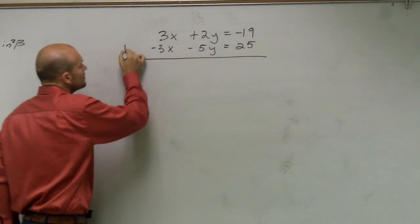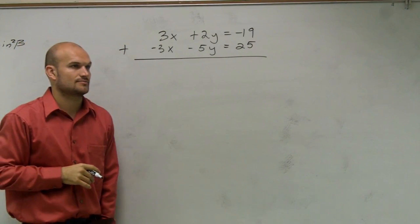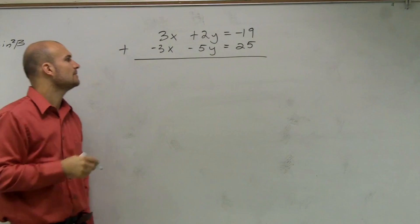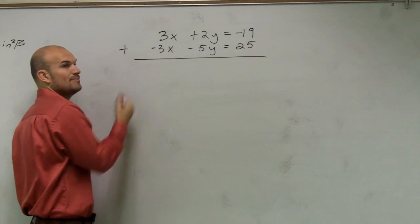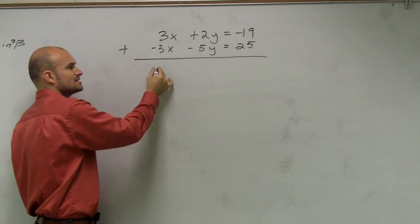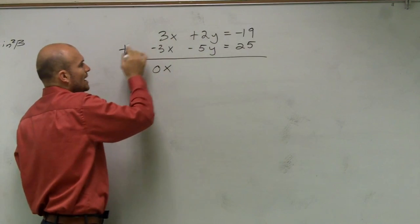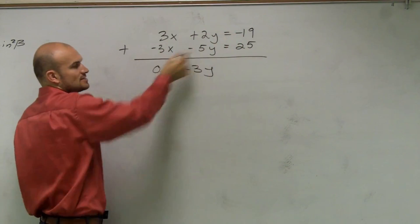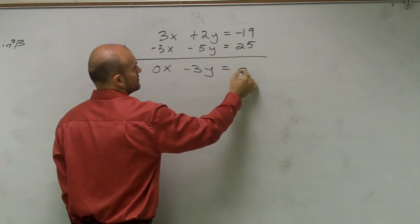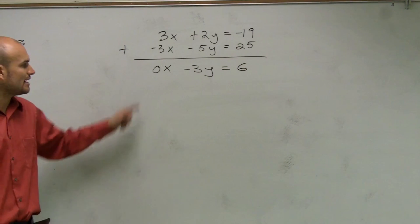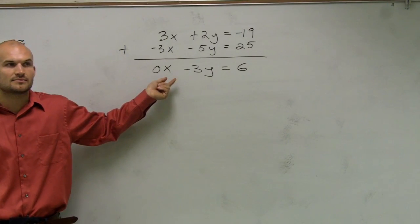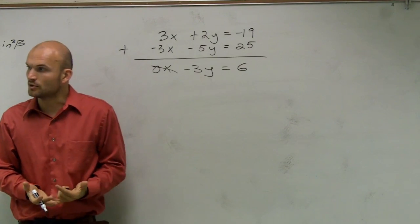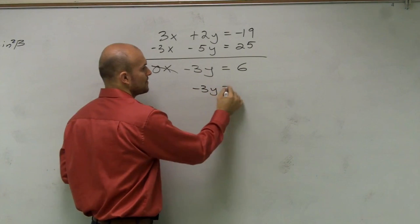So what we're simply going to do is add the two equations. Therefore, 3x plus a negative 3x gives me 0x. 2y plus negative 5y gives me negative 3y. And negative 19 plus positive 25 gives me 6. Now 0 times anything goes to 0 — we just eliminated our variable. So now I have negative 3y equals 6.